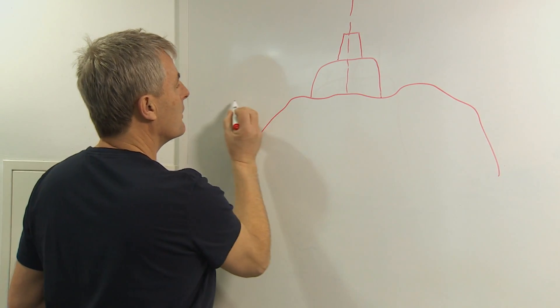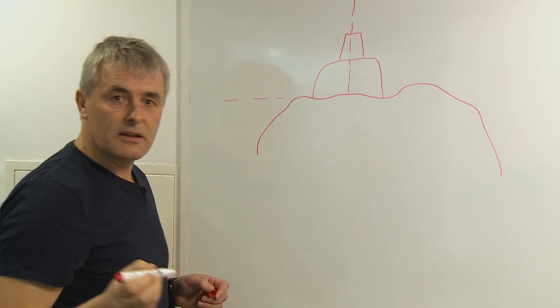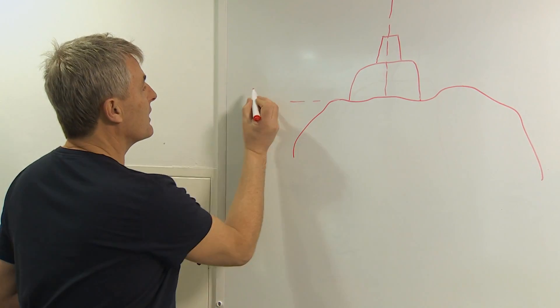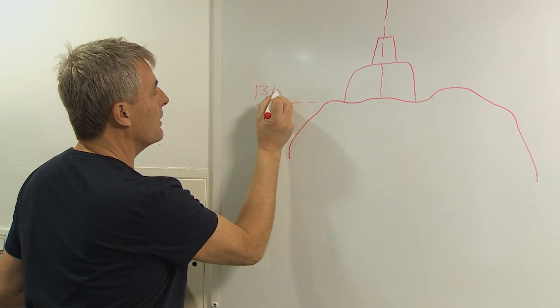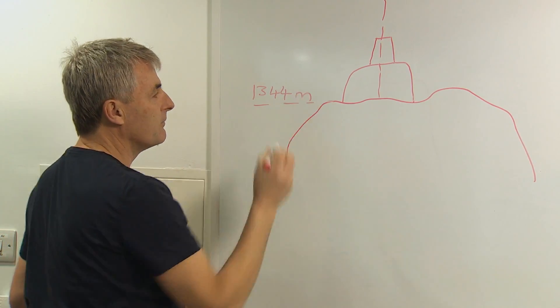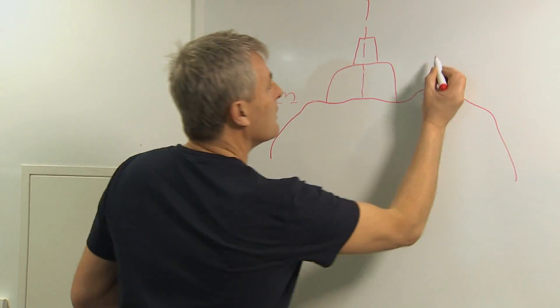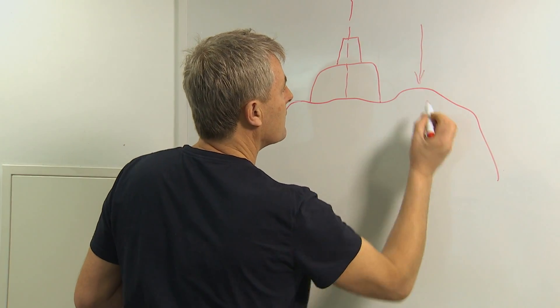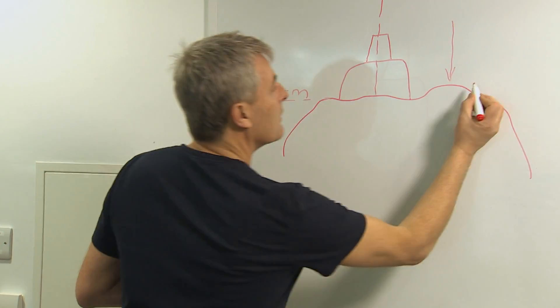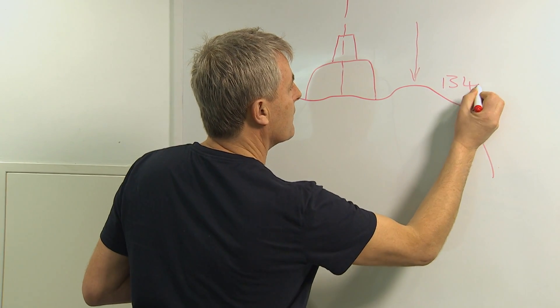Now we show the height of the hill at that point at the base of the cairn, which is one three four four metres. But the natural high point of the hill is slightly set aside from that here, and that's at a height of one three four five metres.